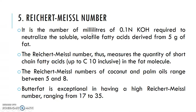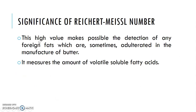The RM number, or Reichert-Meissl number, is the number of milliliters of 0.1 normal KOH required to neutralize the soluble volatile fatty acids derived from 5 grams of fat. The RM number tells us about the quantity of short-chain fatty acids up to carbon number 10 in the fat molecule. Coconut and palm oils have an RM number ranging between 5 to 8, while butter fat has a notably higher Reichert-Meissl number ranging from 17 to 35. A high RM value enables detection of any foreign fat that may have been adulterated in a product, and it is also a measure of the amount of volatile soluble fatty acids.